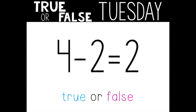Equation number one. Four minus two equals two. True or false? Thumbs up if you think it's true, thumbs down if you think it's false. It's true! Great job, mathematicians! Turn and tell your grown-up how you know four minus two equals two.